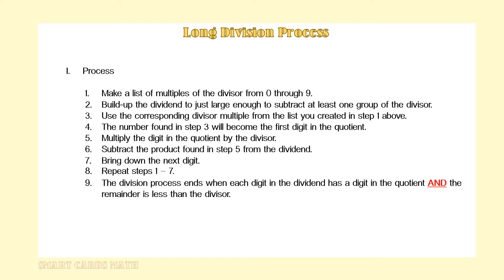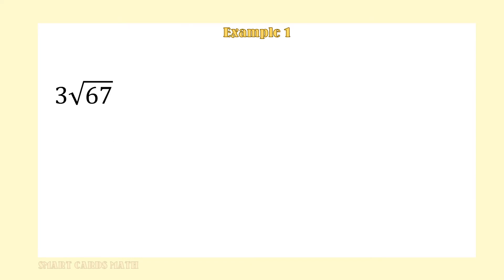The number found in step 3 will become the first digit in the quotient. Next, multiply the digit in the quotient by the divisor. Subtract the product found in step 5 from the dividend, then bring down the next digit. We repeat these steps 1 through 7 until the division process ends — when each digit in the dividend has a digit in the quotient and the remainder is less than the divisor.